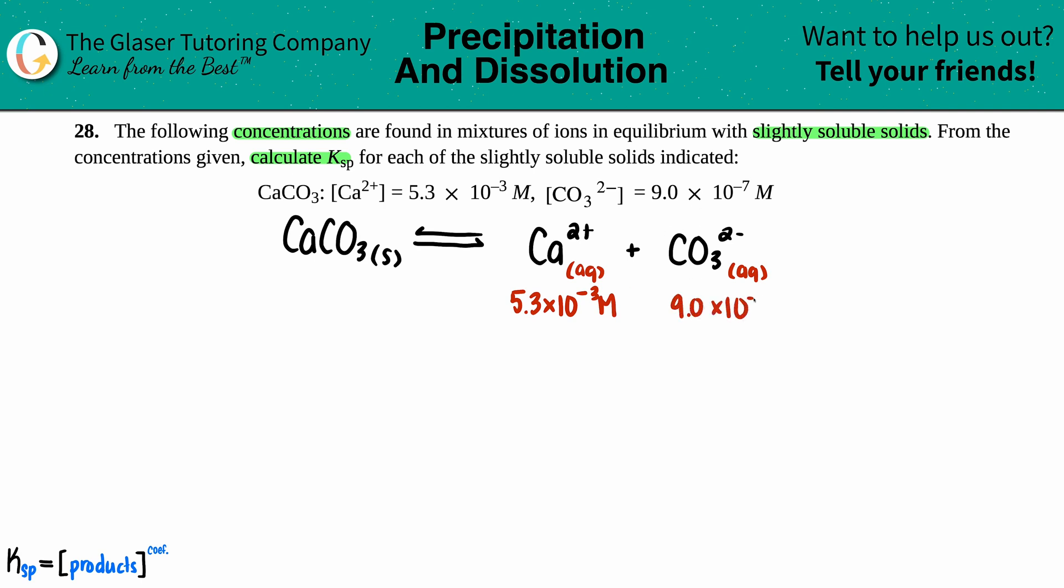From these, let's write out the general Ksp equation for this one. The general equation: Ksp equals the concentration of the products raised to their coefficients. So we're going to make one for our scenario with the calcium and the carbonate. Ksp would equal the concentration of calcium times the concentration of carbonate.